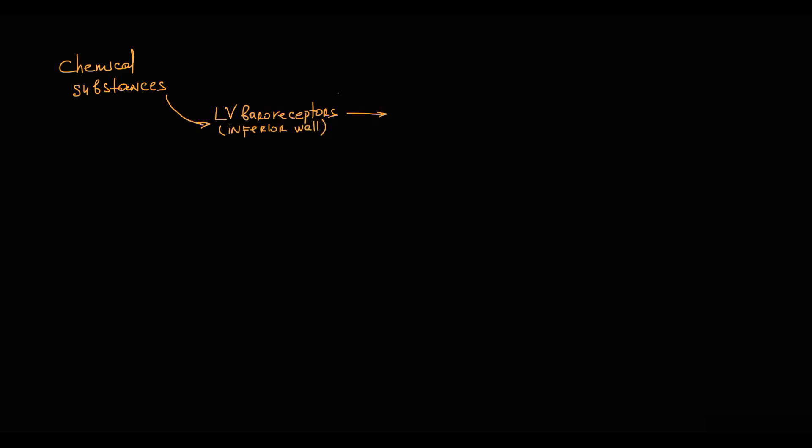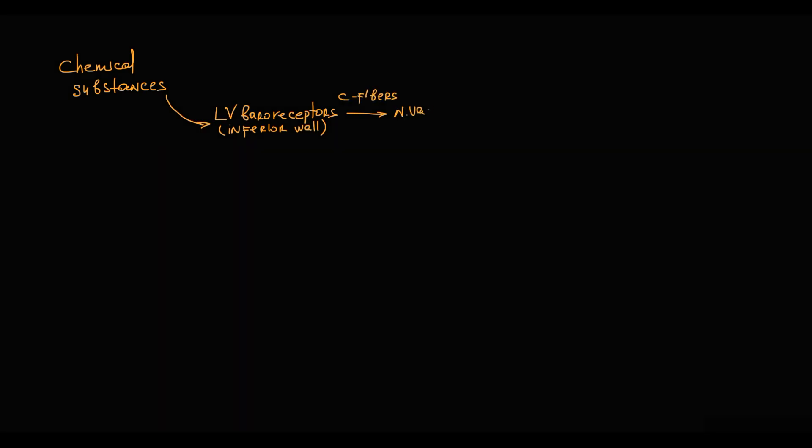Now about the reflex pathway. When chemical substances appear in the blood, they activate baroreceptors localized in the inferior walls of the left ventricle. From baroreceptors, signals in afferent unmyelinated C-fibers go through the vagus nerve to the brainstem, to nucleus tractus solitarius, that directs the activity of cardiovascular centers.